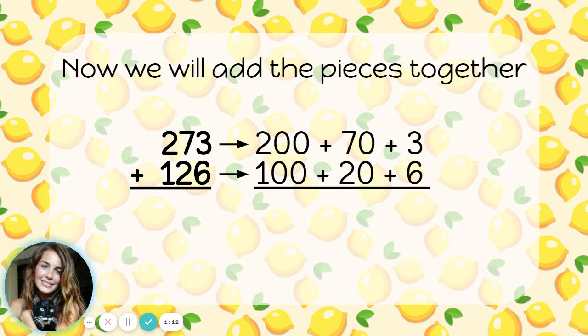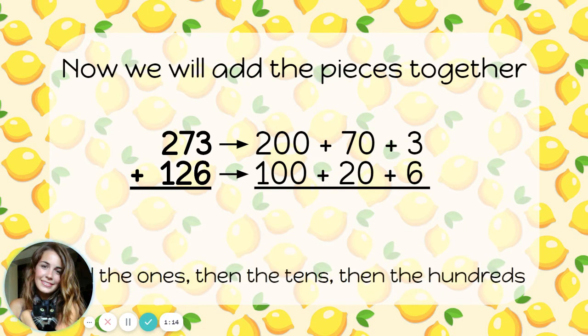Now we'll add the pieces together. We're going to add the ones, and then the tens, and then the hundreds like this. 3 plus 6 is 9. Now let's add the tens. 70 plus 20 is 90. And finally, let's add the hundreds. 200 plus 100 is 300.